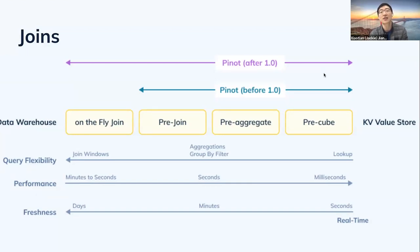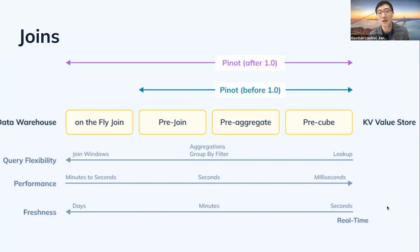As Xiang mentioned, Pinot started to solve the problem of super low latency, high throughput use cases by relying on pre-joined data. Pinot would build indexes on the pre-joined single table with pre-aggregation and pre-cubing. But now with 1.0, we want to extend Pinot's capability to be much more flexible. With on-the-fly join support, we can support joins and window functions, which will bring Pinot to the next level with many new use cases.